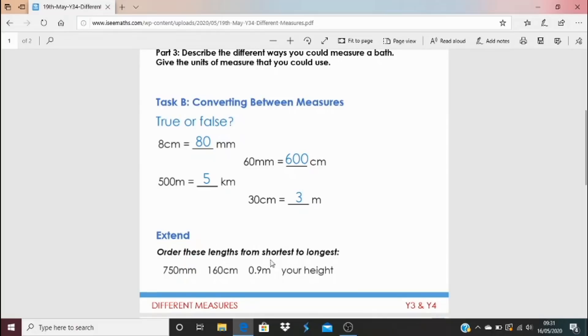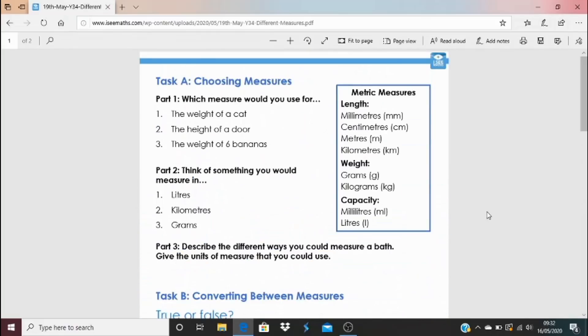And then again, if you want an extend task, order these lengths from shortest to longest. 750 millimeters, 160 centimeters, 0.9 meters and your height. I've got some suggestions for answers at the bottom. And it's been great having you joining in. I'll be back tomorrow.